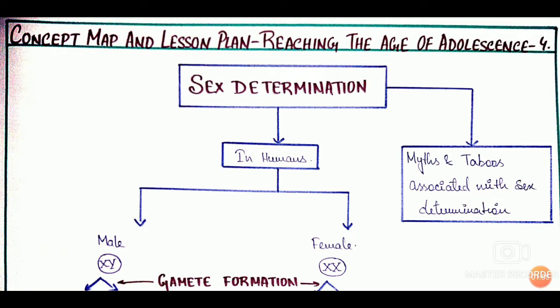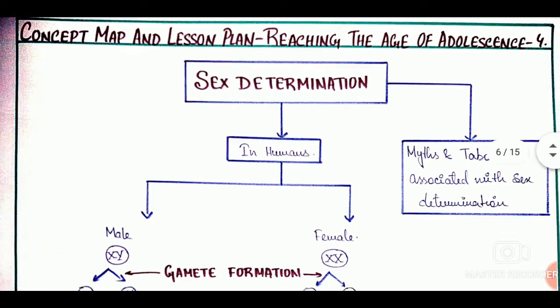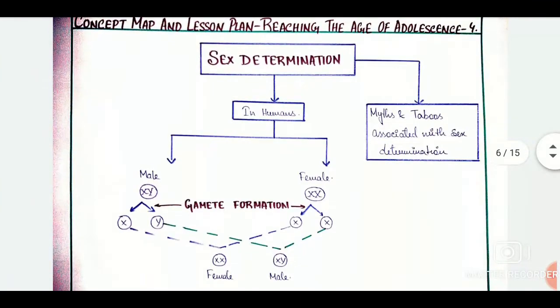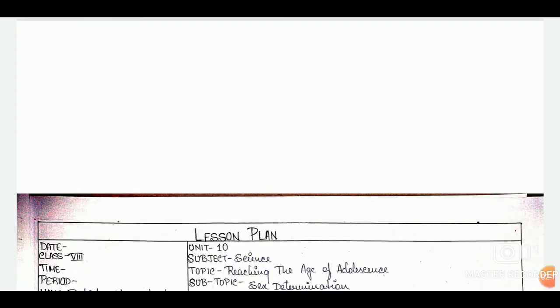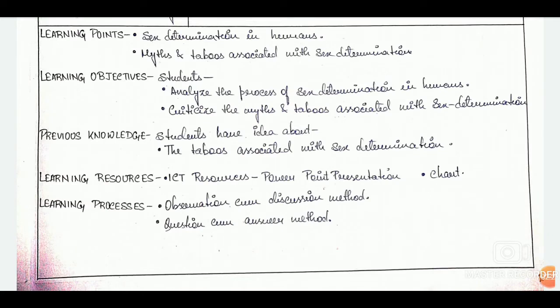Now we are looking at the 4th lesson plan from the same chapter, 'Reaching the Age of Adolescence.' This is the concept map of the chapter. You can take a screenshot or pause the video whenever you want. After the concept map we move on to the details again: date, class, time, period, unit, subject, topic, and subtopic. This is the proper format of our lesson plan.